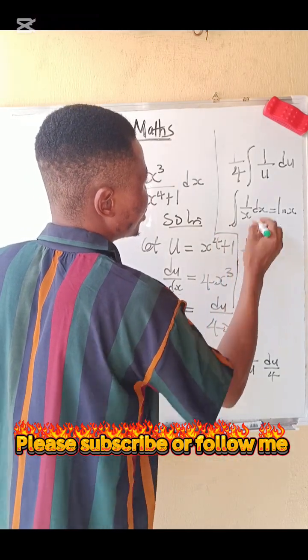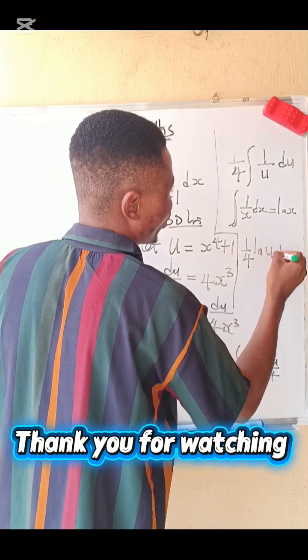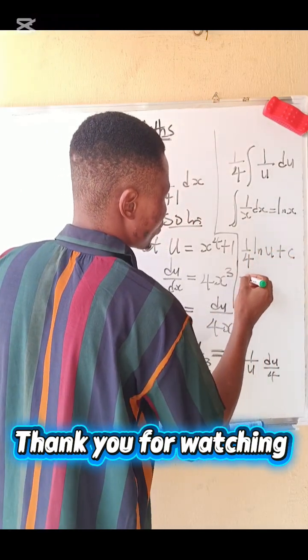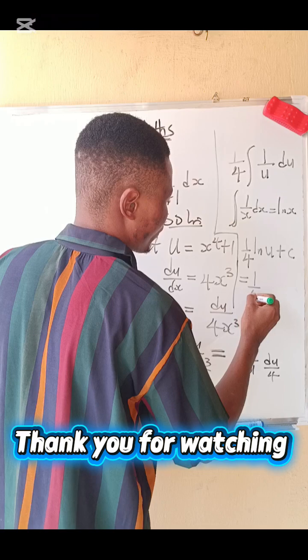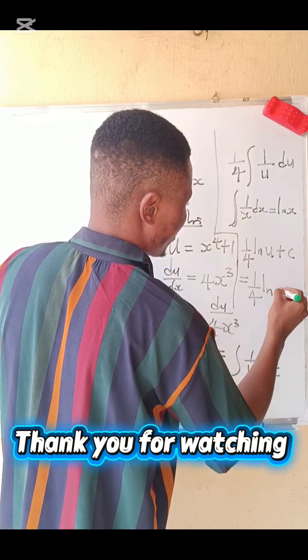That 1 over 4, when you integrate here we are going to have ln u plus c. So what was your u? We have 1 over 4 ln where u was x to the 4 plus 1, then plus c. And this is the final answer.